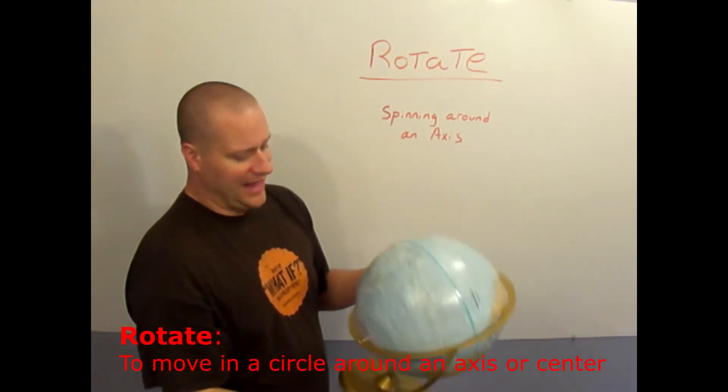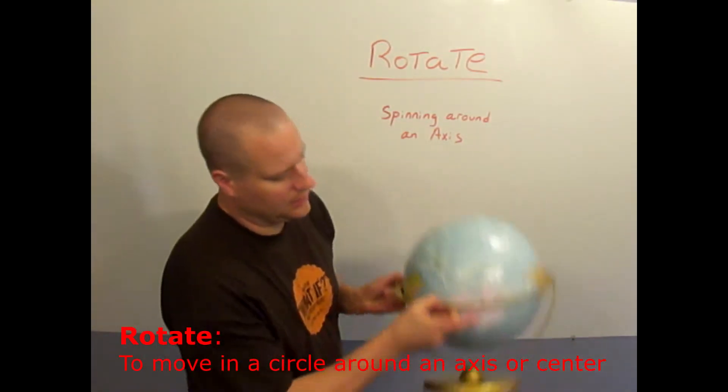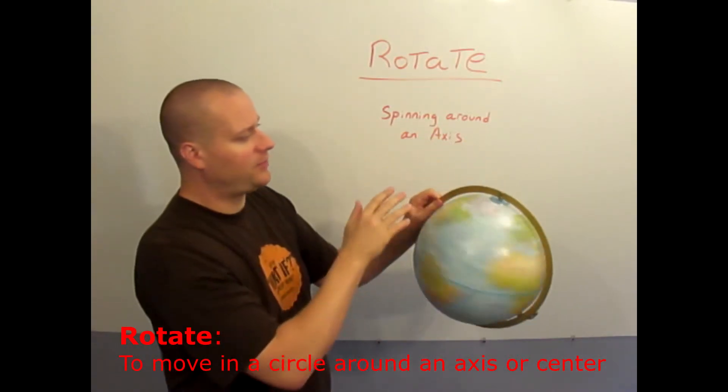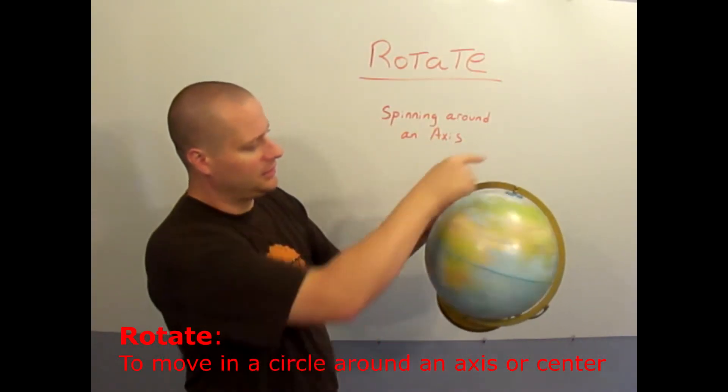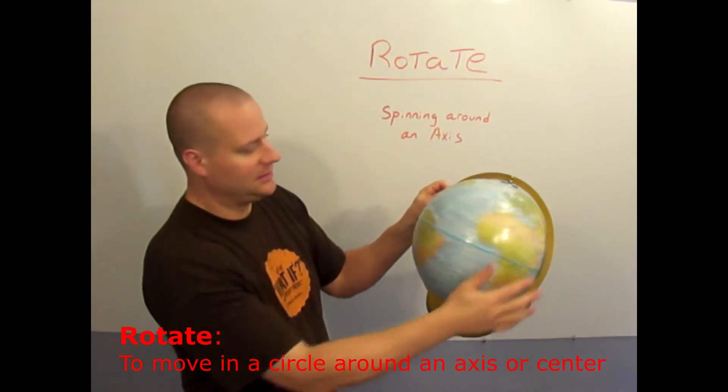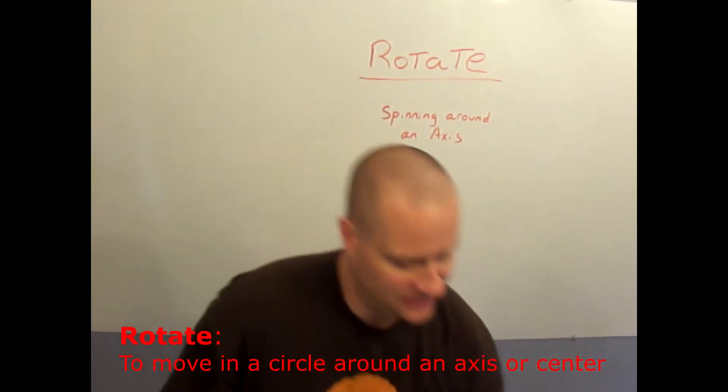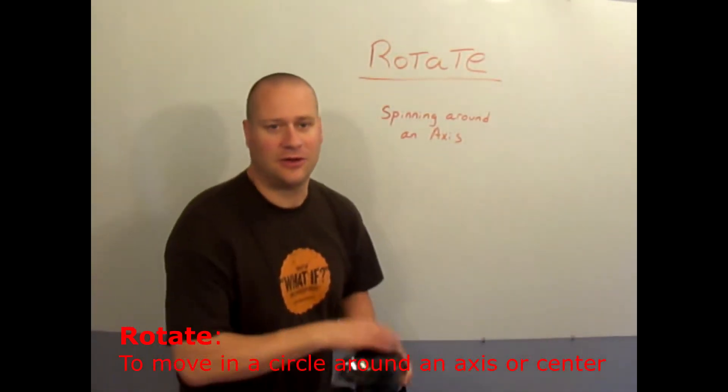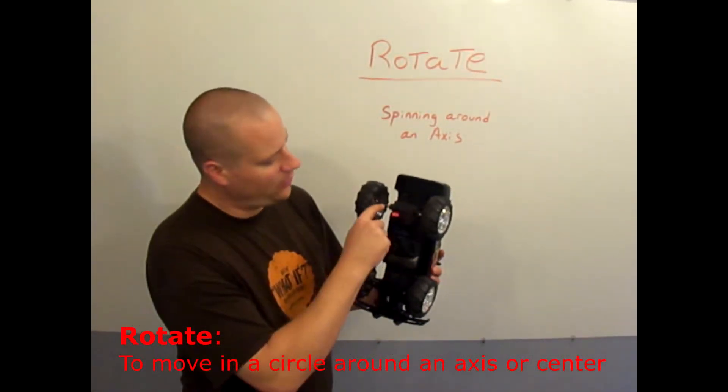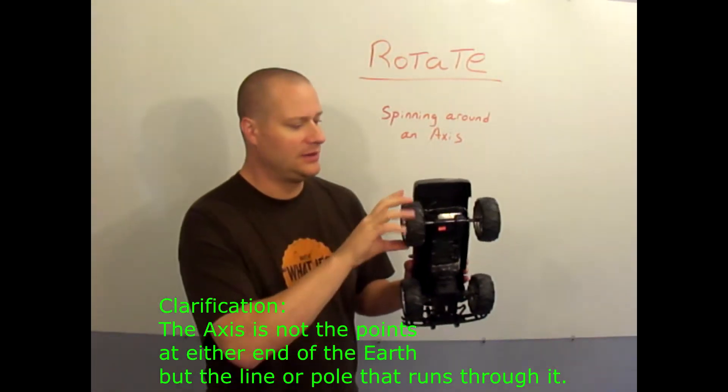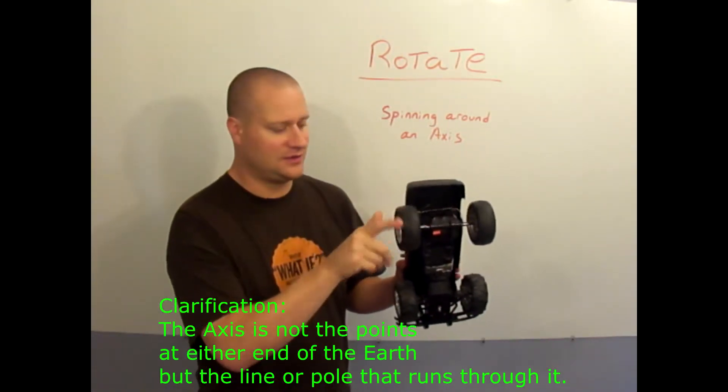An axis would be this point here and this point here, those parts don't move because they're the axis and everything else revolves around that axis. Another way to think about it is like the axle of a car. Here's this pole that runs through from connecting wheel to wheel, and as I spin these wheels they spin on their axle or axis.